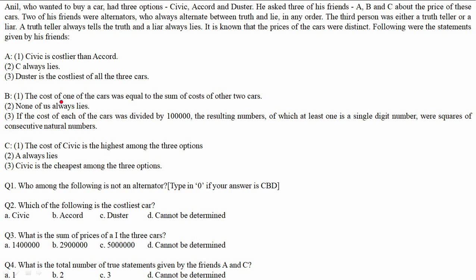Similarly, C also has a statement mentioning 'A always lies.' If C were a truth teller, all of C's statements must be true — but that would make A a liar, giving us two non-alternators again. So C cannot be a truth teller either.